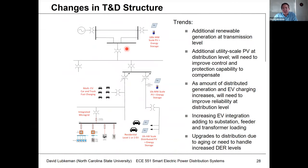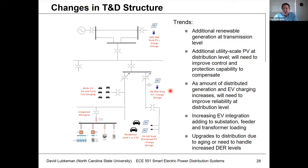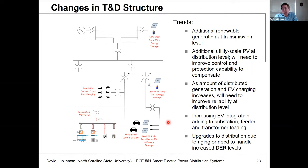Looking at the T&D diagram going forward, we're going to see more bulk generation become renewable-based. We'll see more of this at the distribution level as well — this is happening now but will continue to increase. We'll likely see many feeders end up above 100% renewable penetration.